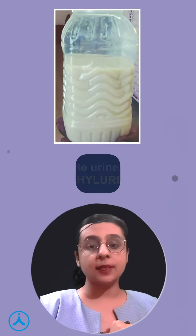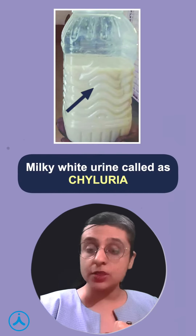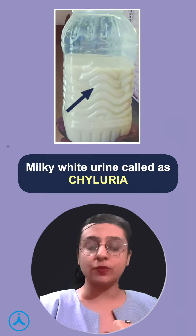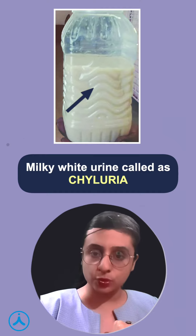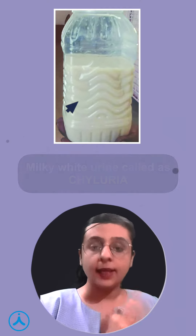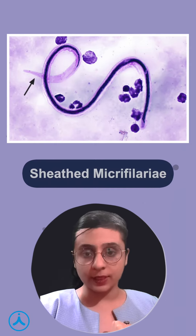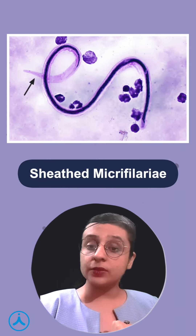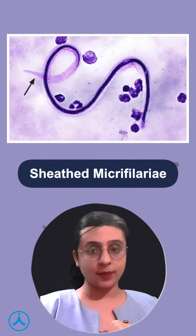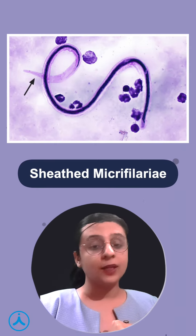Next, you can see milky white urine, which occurs due to leakage of lymphatics into the urine, called chyluria. And lastly, you can see the presence of sheathed microfilariae. Now, what are three important examples with sheathed microfilariae?